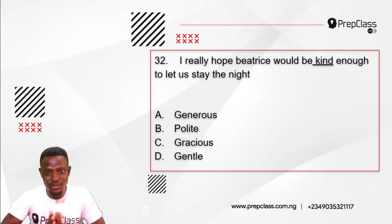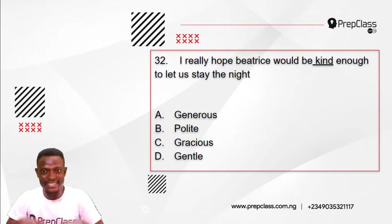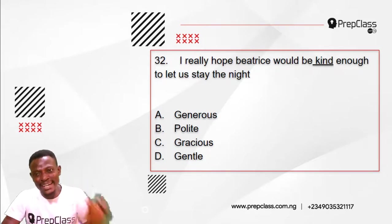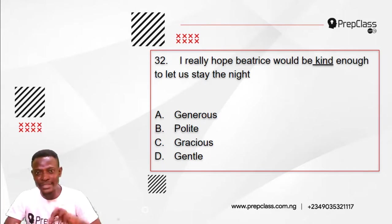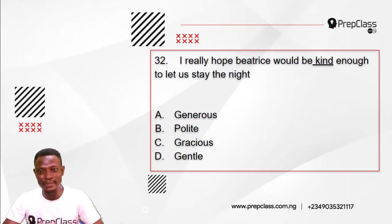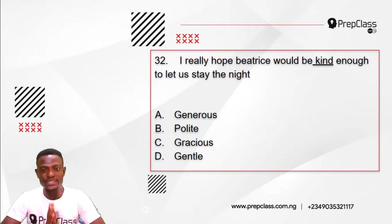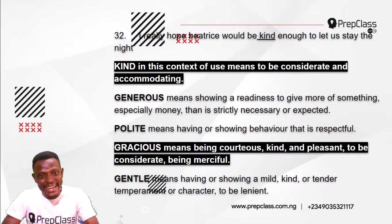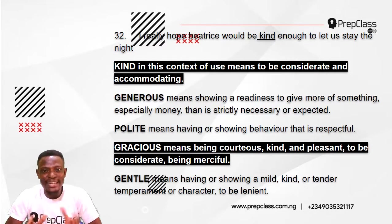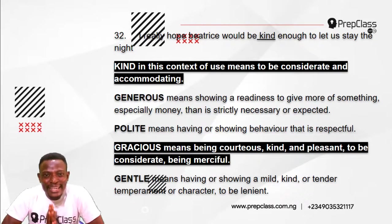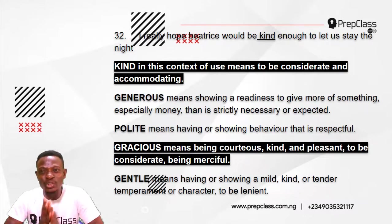Moving on, question 32. We are to select the option nearest in meaning to the underlined word. Question 32 reads: I really hope Beatrice would be kind enough to let us stay the night. The underlined word is 'kind.' Options: A: generous, B: polite, C: gracious, D: gentle. In this context, 'kind' means to be considerate and accommodating.